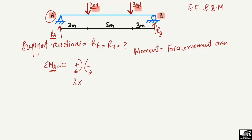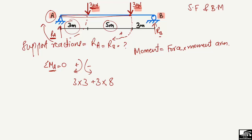The first load of 3 kilonewton is multiplied by its moment arm, which is the distance from the load to point A — that is 3 meters — and it produces a clockwise moment, so it's positive. The second load of 3 kilonewton has a moment arm of 5 plus 3 equals 8 meters, also clockwise and positive. RB creates a counterclockwise moment about A, so it is negative, with a moment arm of 3 plus 5 plus 3 equals 11 meters.